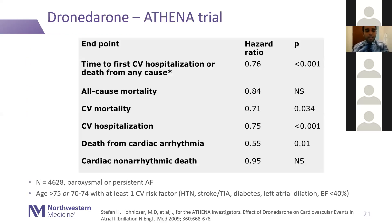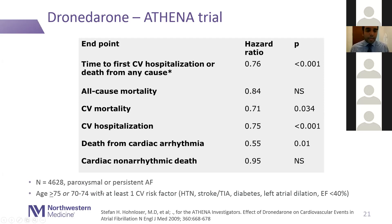Some important dronedarone trials. The ATHENA trial included over 4,600 patients with paroxysmal or persistent AFib, with major inclusion criteria of age greater than 75 or age 70–74 with at least one risk factor such as hypertension, stroke, prior TIA, diabetes, dilated left atrium, or low EF. Dronedarone reduced time to first CV hospitalization or death from any cause as a combined endpoint, with the benefit primarily driven by decreased hospitalizations. Most patients in this trial were paroxysmal, and very few had an EF less than 40%. This was one of the positive trials for dronedarone.